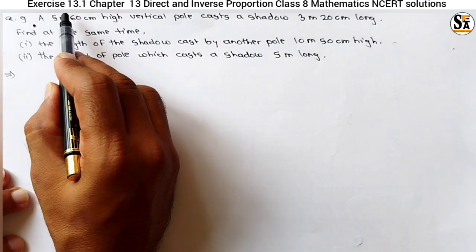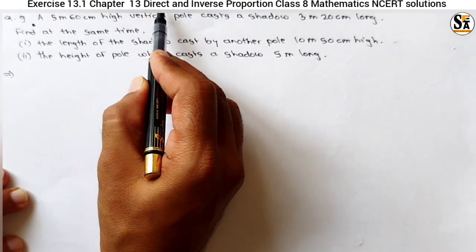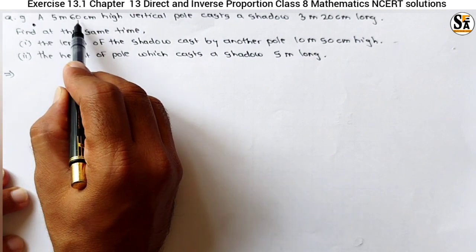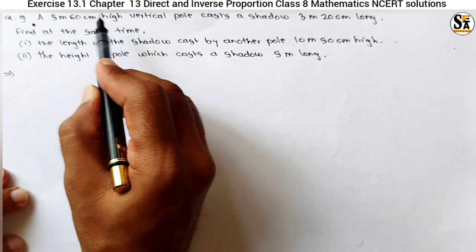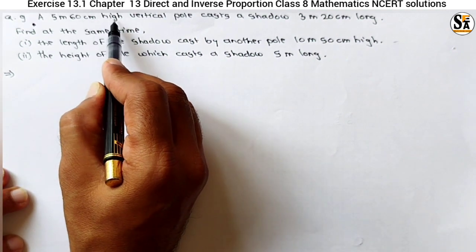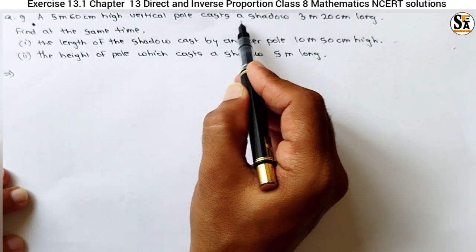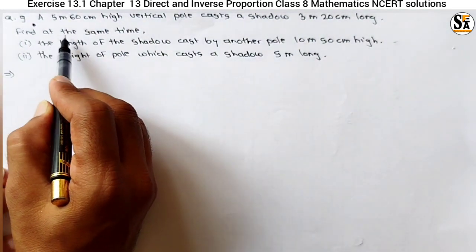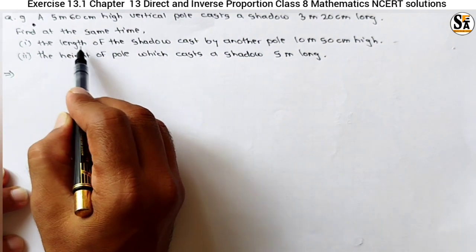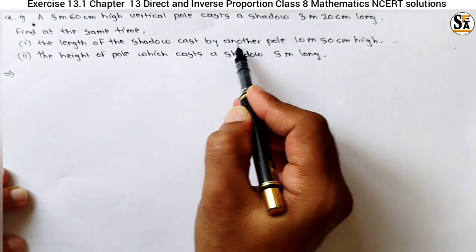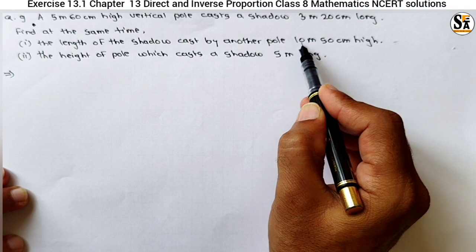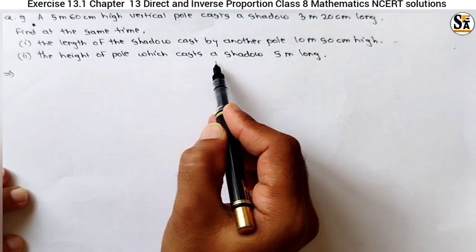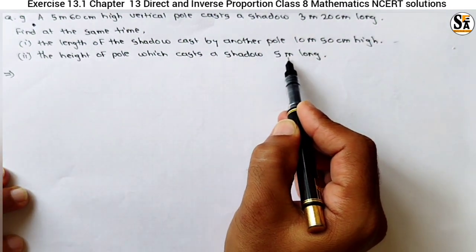See question number 9 of exercise 13.1, chapter Direct and Inverse Proportion, class 8 mathematics. A 5m 60cm high vertical pole casts a shadow of 3m 20cm long. Find, at the same time, the length of the shadow cast by another pole of height 10m 50cm, and the height of the pole which casts a shadow of 5m long.